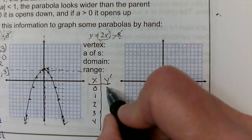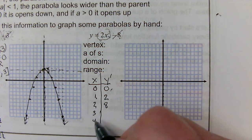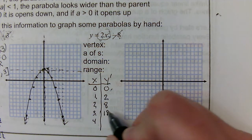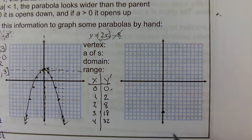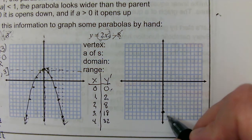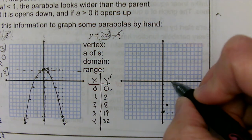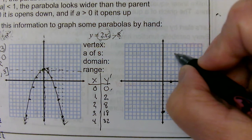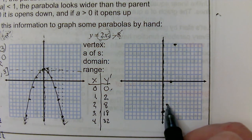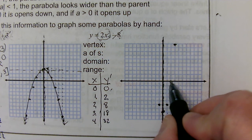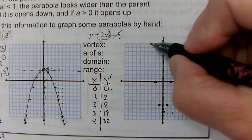0 squared is 0 times 2 is 0. 1 squared is 1 times 2 is 2. 2 squared is 4 times 2 is 8. 3 squared is 9 times 2 would be 18 — I have a feeling that one's going to be too high to fit on the graph. But remember, we're counting from the vertex, not the origin. So: right 1, up 2; right 2, up 8; right 3, up 18. My axis of symmetry is the vertical line through the vertex, so each point to the right has a reflection to the left.